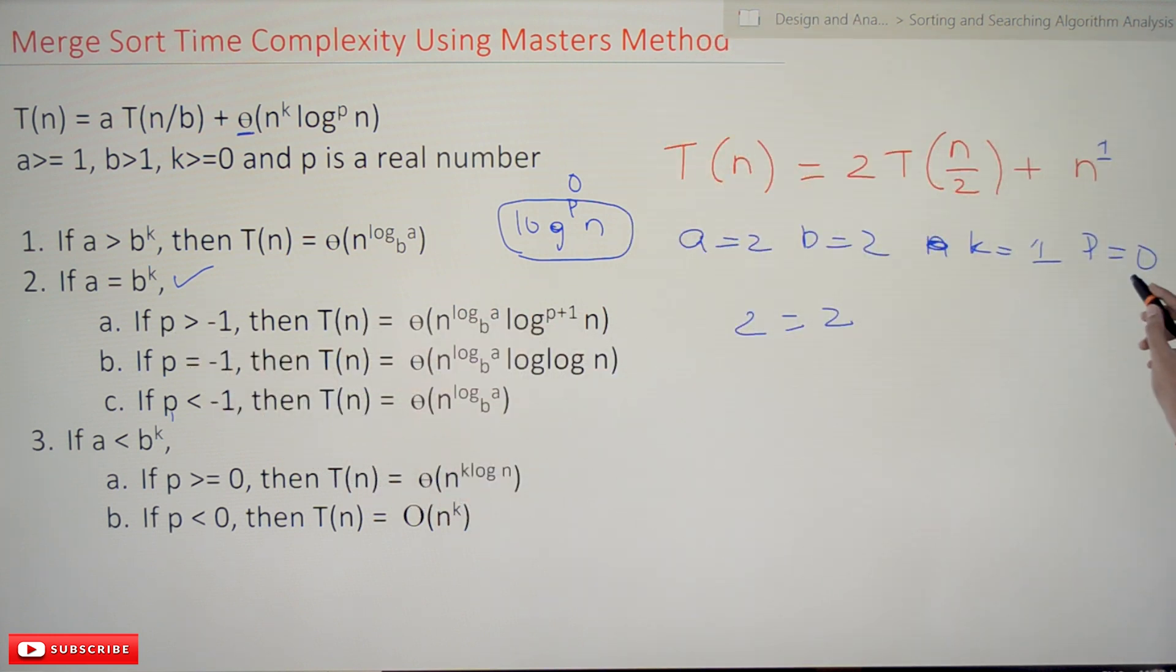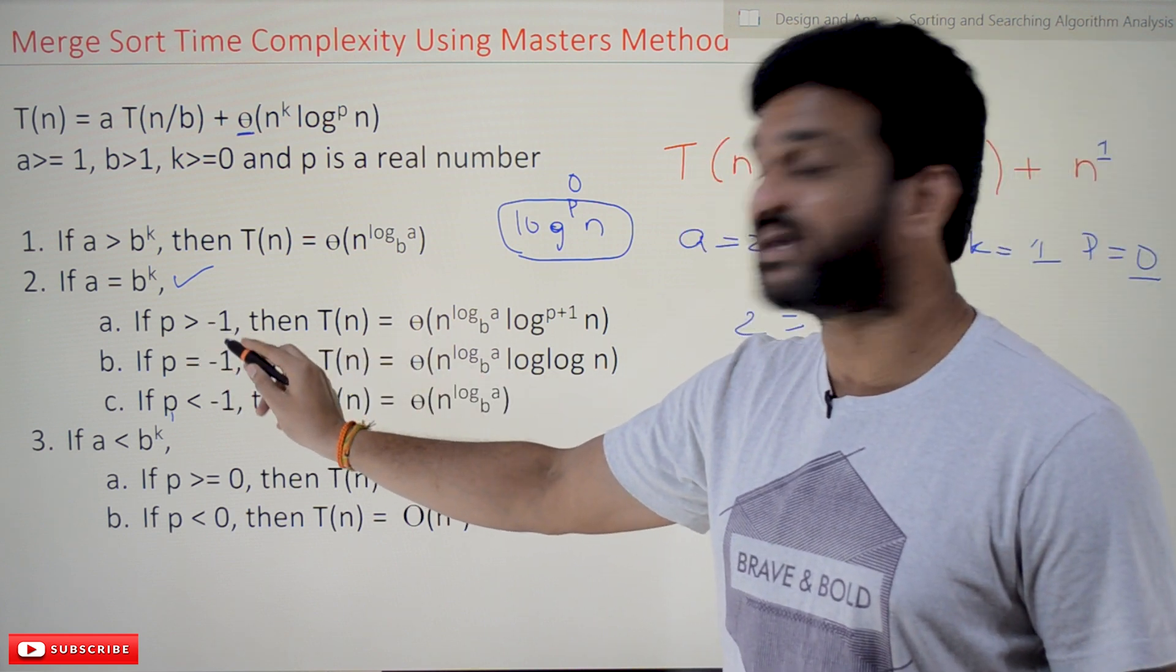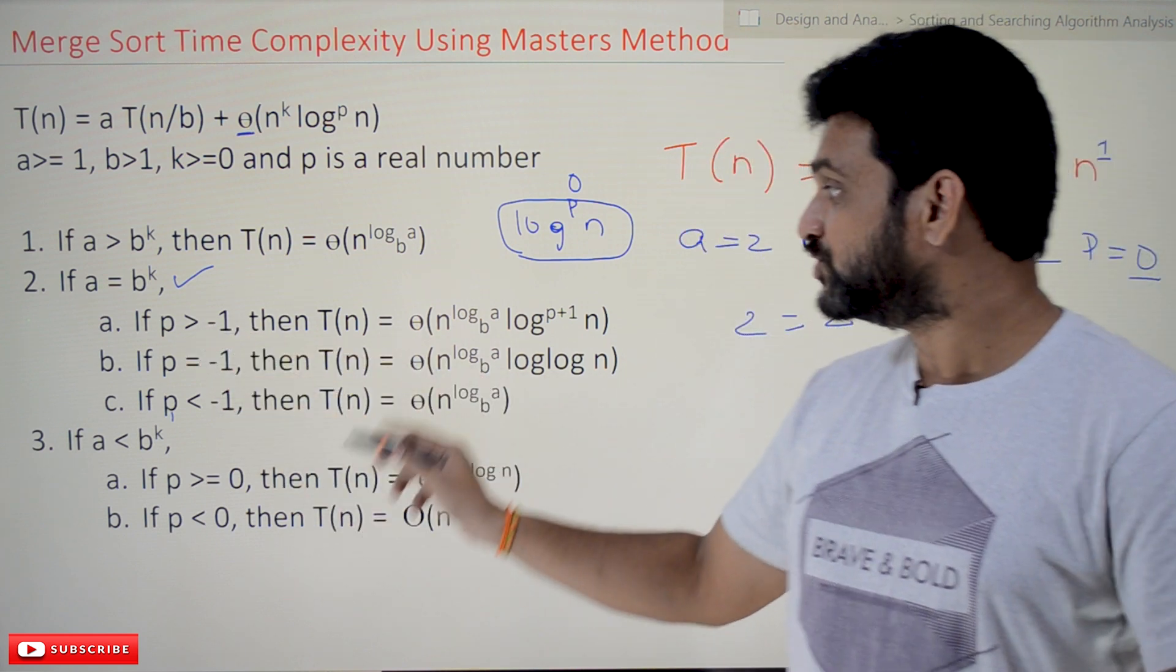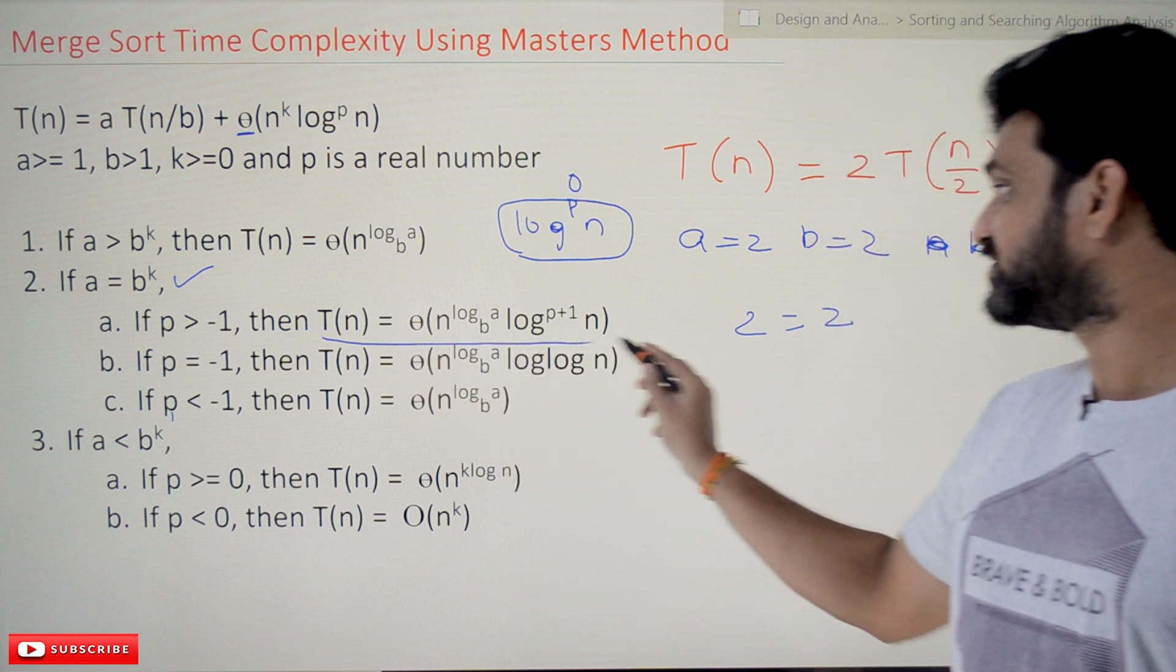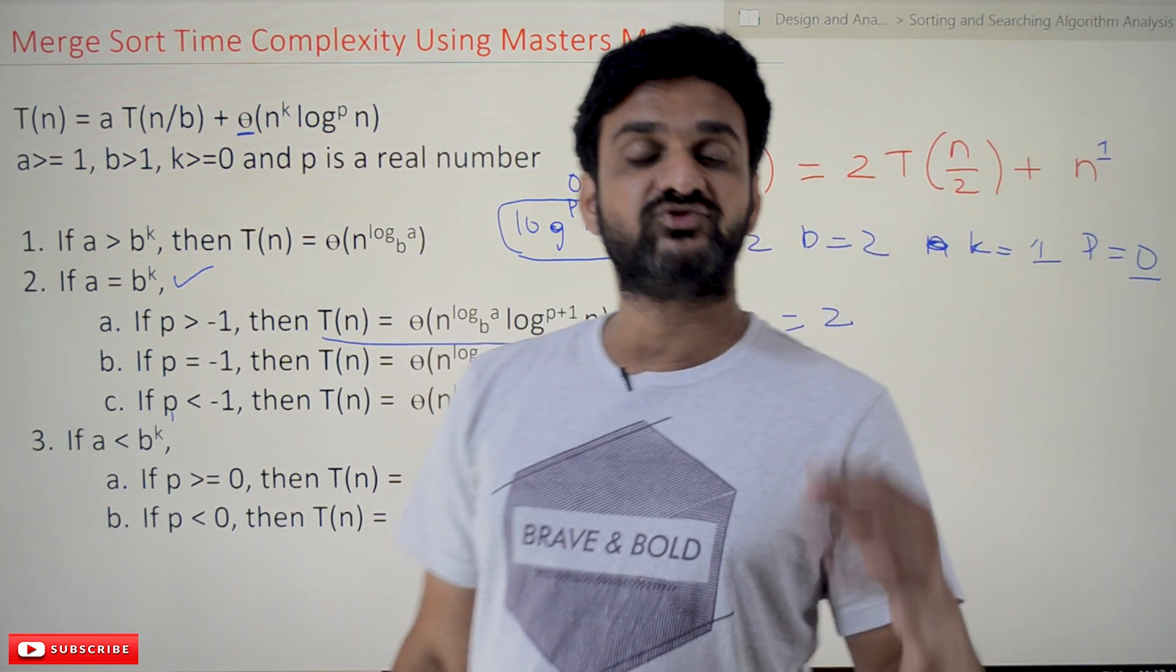If this is true, then we have to go for these options. How is p behaving? Is p greater than -1? What is the value of p? p is equal to 0, so p is greater than -1. Yes, it is true.